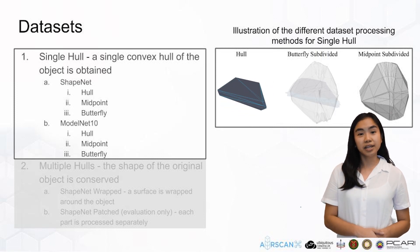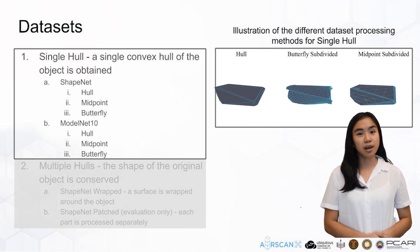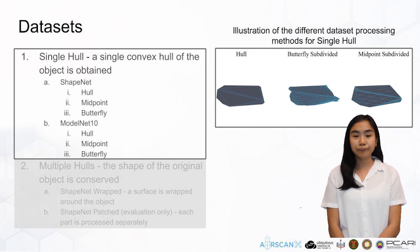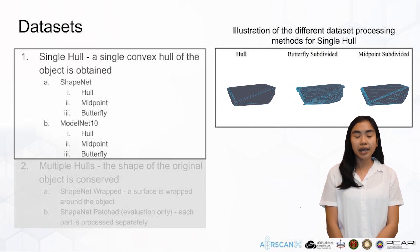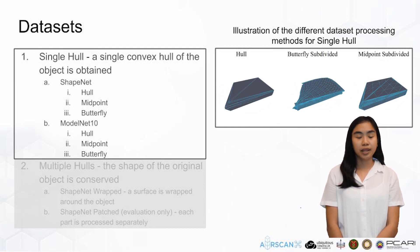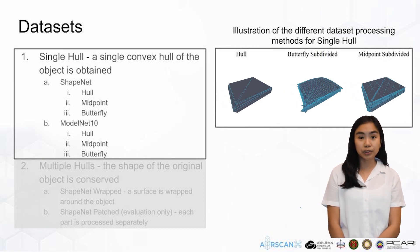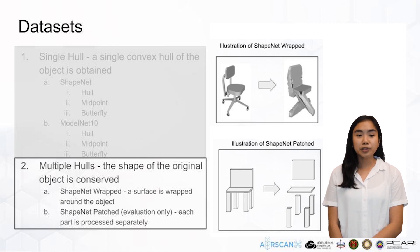The second is the butterfly subdivided meshes, or butterfly, and the third is the midpoint subdivided meshes, or midpoint. The hull setting involved training and evaluating the network on the original convex hull vertices. The butterfly and midpoint configurations were applied to add more points to the set of meshes belonging to hull, aiming to approach a more uniform distribution. Aside from single hull datasets, ShapeNet meshes with multiple hulls are also examined. Multiple hulls are used to preserve the shape of the original objects.